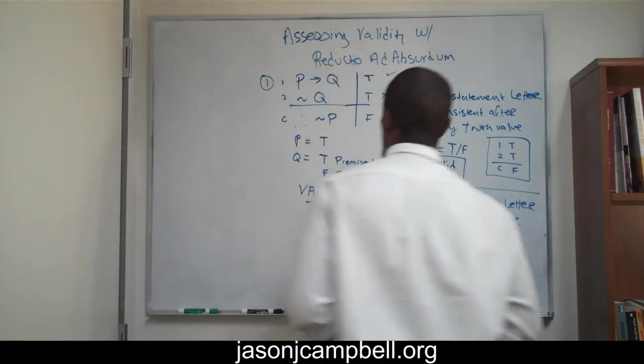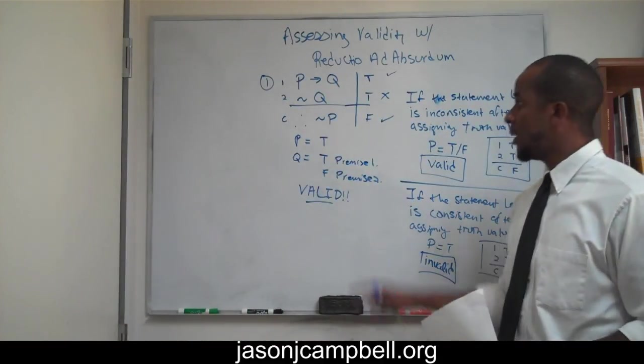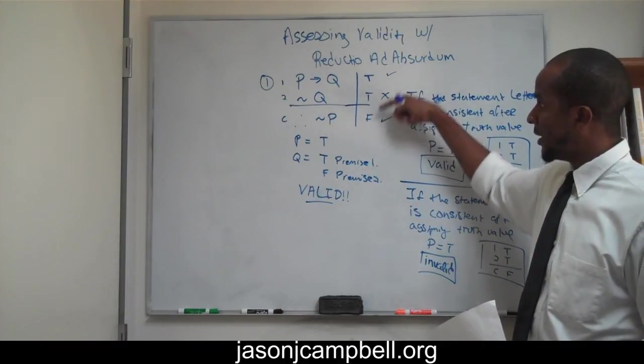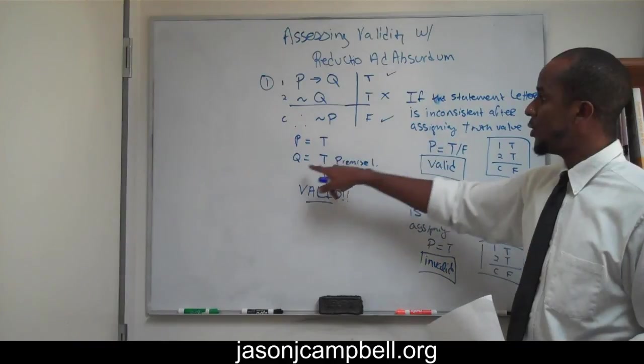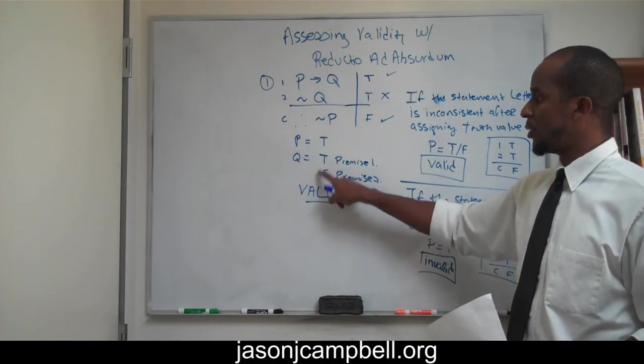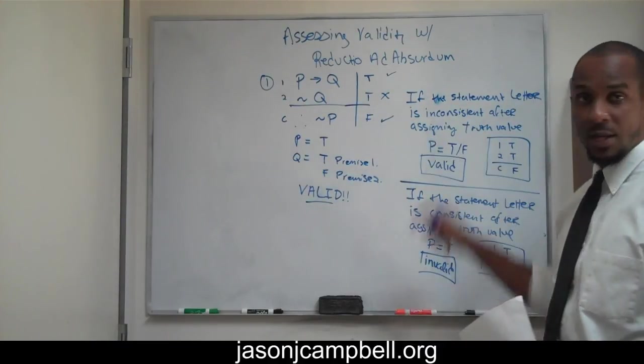We know that one is valid. How do we know that one is valid? Because in order for us to attain this invalid structure, we had to implement on line two, two different truth values for our statement letter.